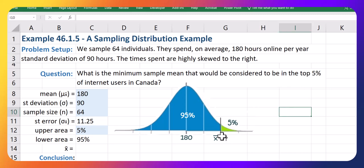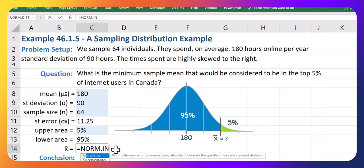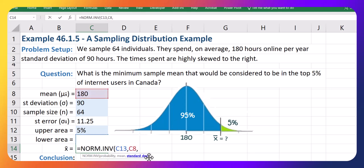Okay, so now to get the sample mean value. And this is really just like a normal distribution problem, and an inverse one, if you will, because we have the area and we want to work backward to get the x value, or in this case, the x bar value. So to do one of these inverse problems, we're going to use NORM.INV. And the probability is always that left side probability or the area to the left. And then we put in the mean of 180. And for the standard deviation, we put in the 11.25.